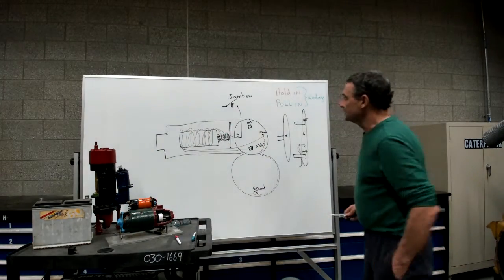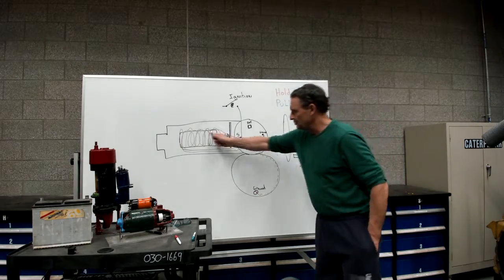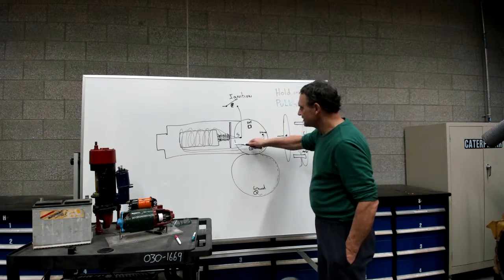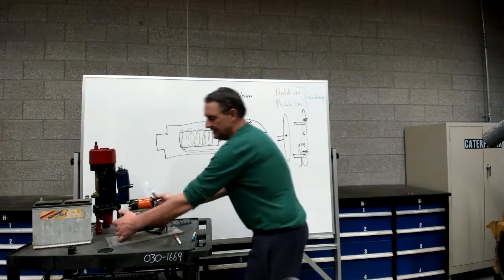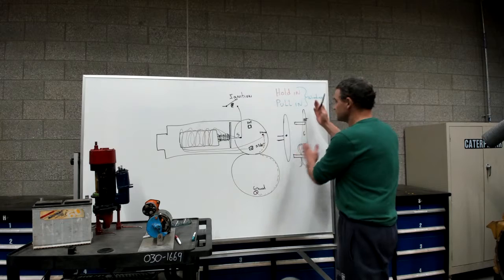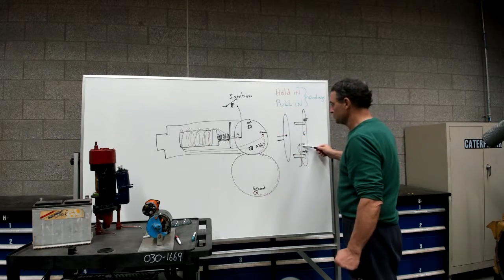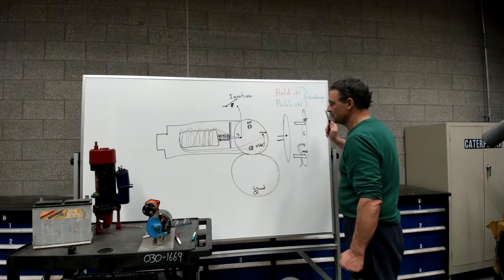So what happens is we've got the windings, we've got the solenoid, there's our contact disc. This is the end of the solenoid here that we're talking about and this is a side view of what's going on. So there's your battery post, there's your motor post, your signal post and your ground post.